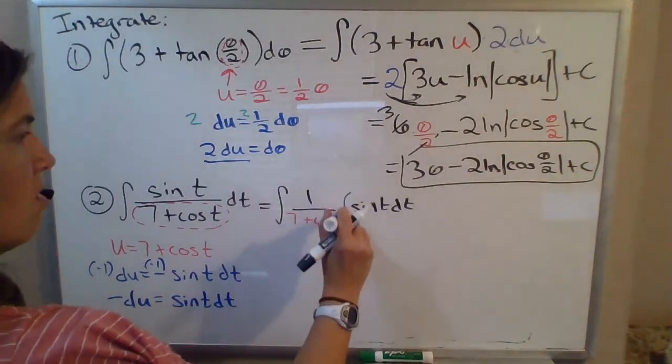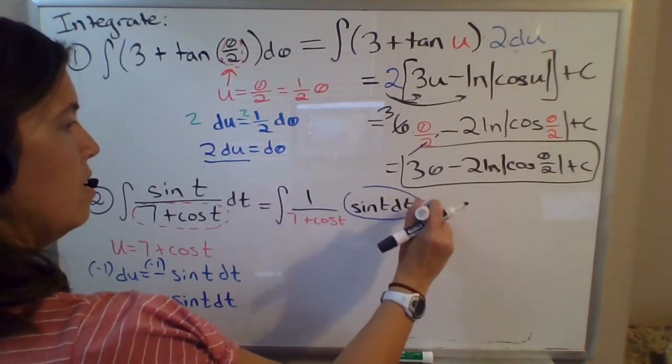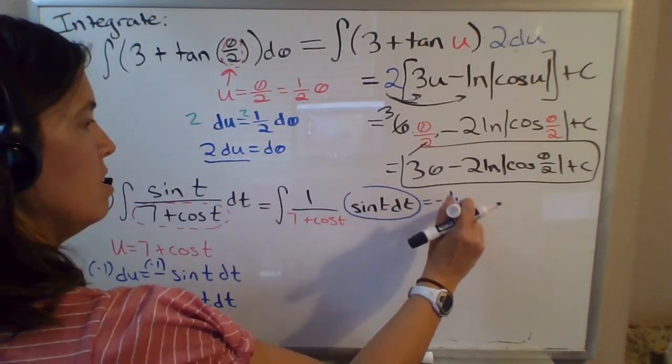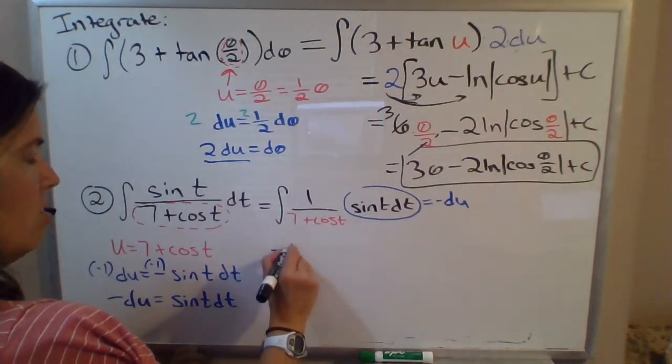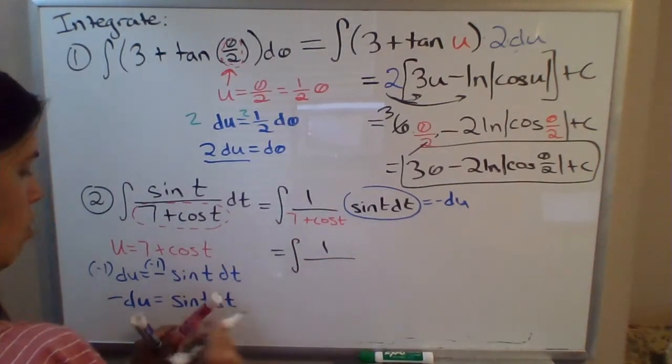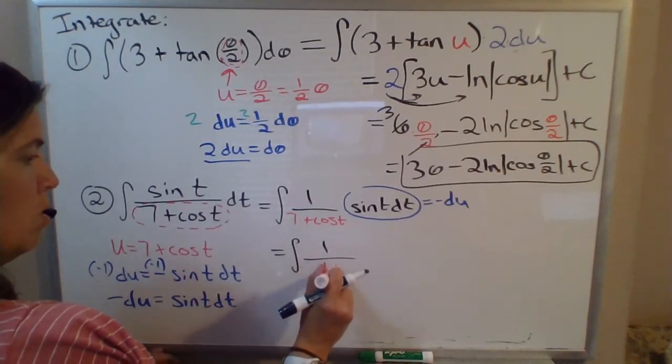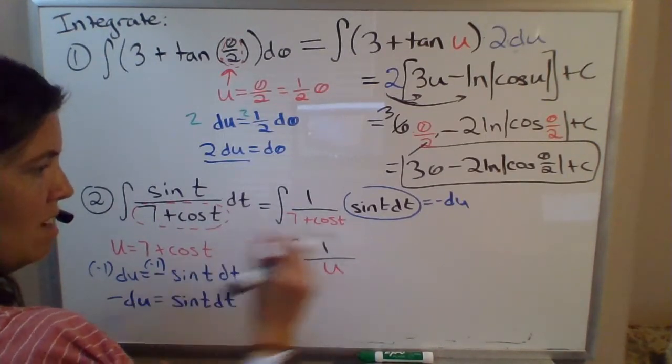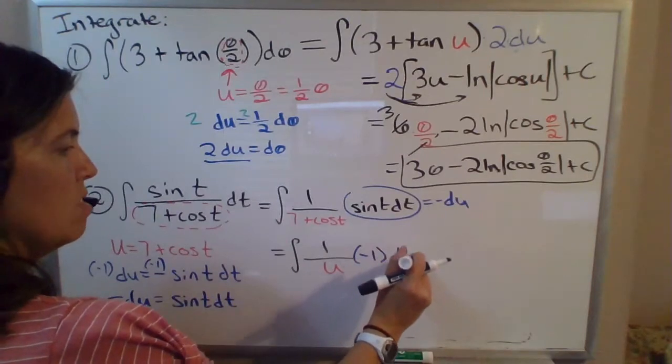So this is equal to negative 1 times du. And so this is the integral 1 over u times negative du. I'm going to write that as negative 1 times du.